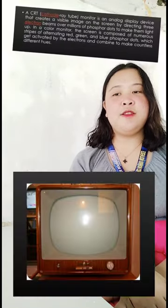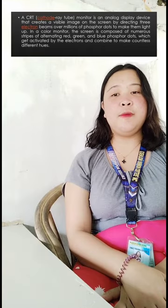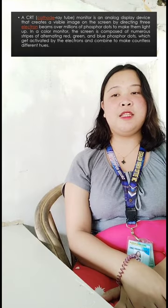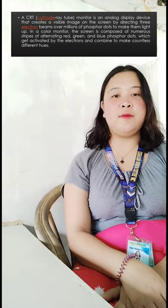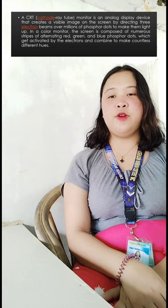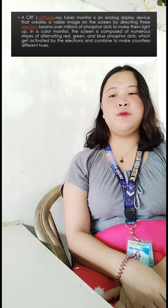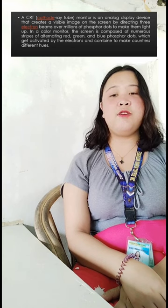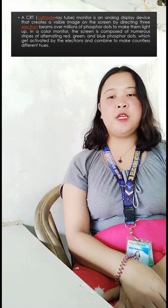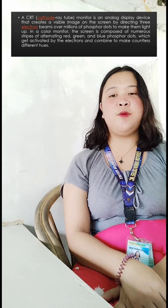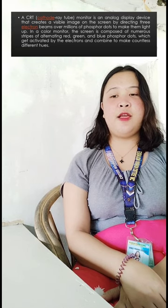First, CRT or cathode ray tube monitor is an analog display device that creates a visible image on the screen by directing three electron beams over millions of phosphor dots to make them light up. In a color monitor, the screen is composed of numerous stripes of alternating red, green, and blue phosphor dots which get activated by the electrons and combine to make countless different colors.